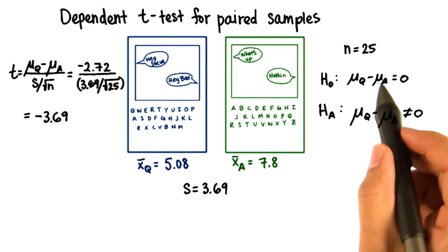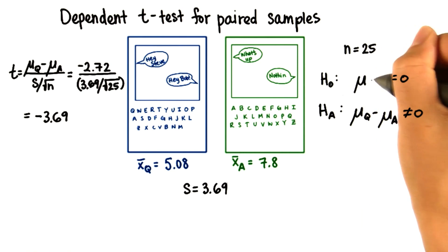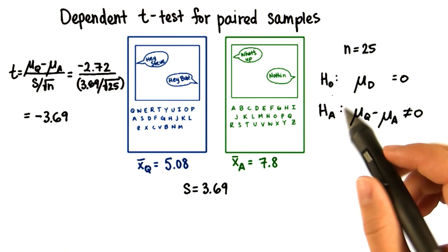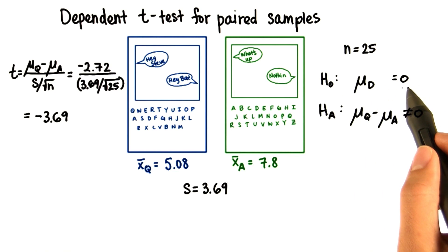Instead of writing this as a difference, we can just write mu sub d, which means the difference between these two population means. The null assumes that this difference will be 0, and the alternative assumes that they'll not be 0.